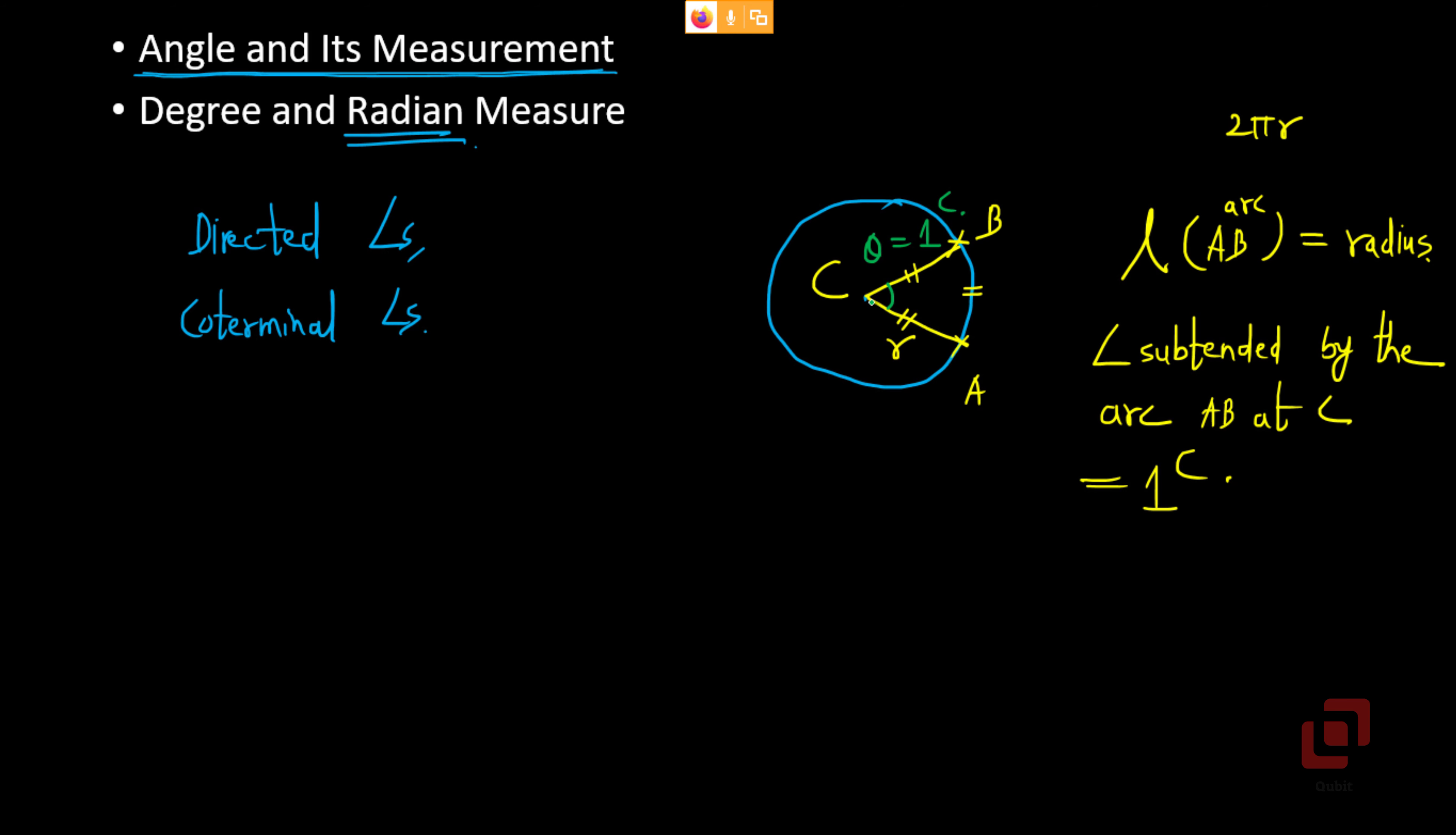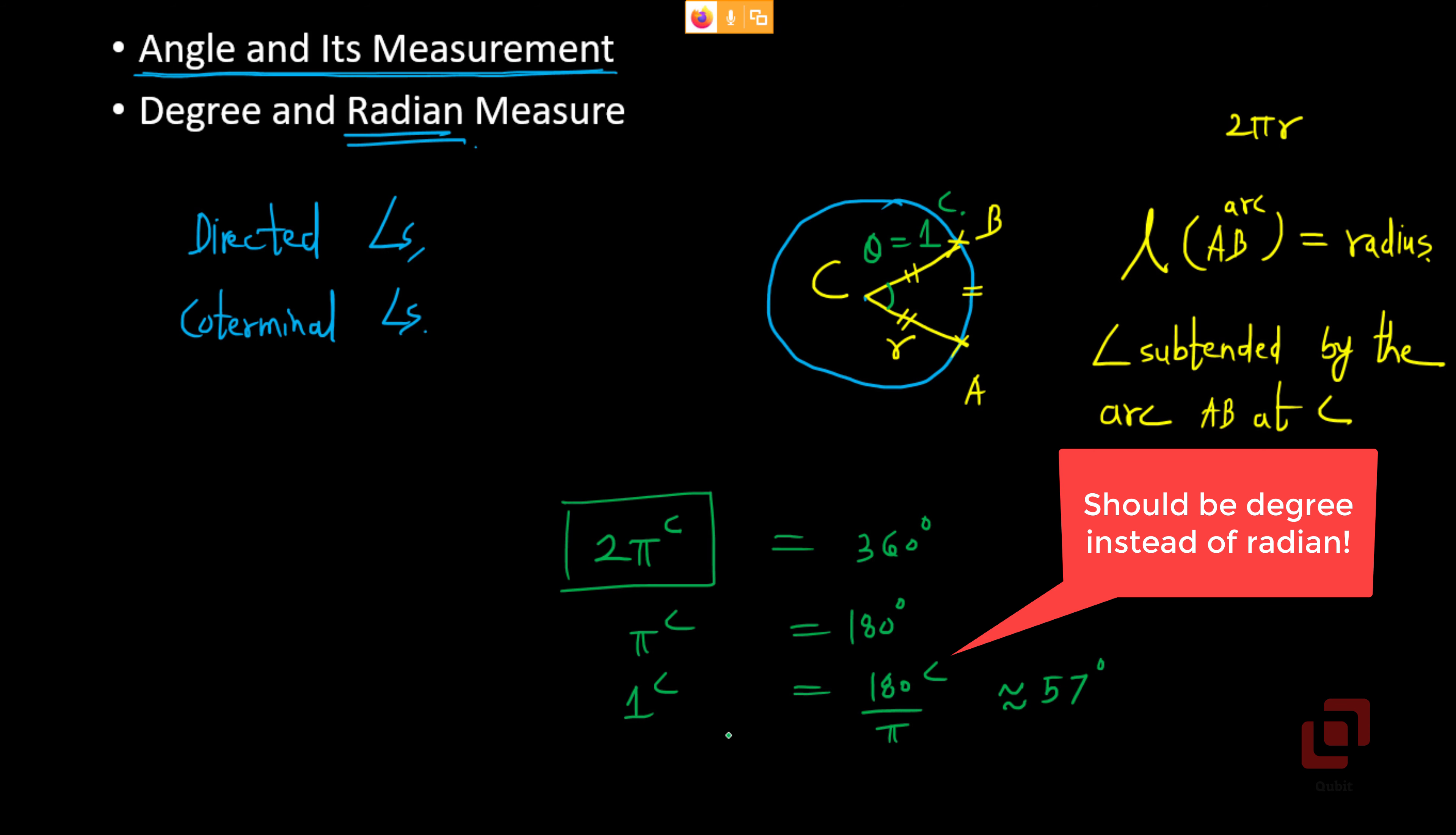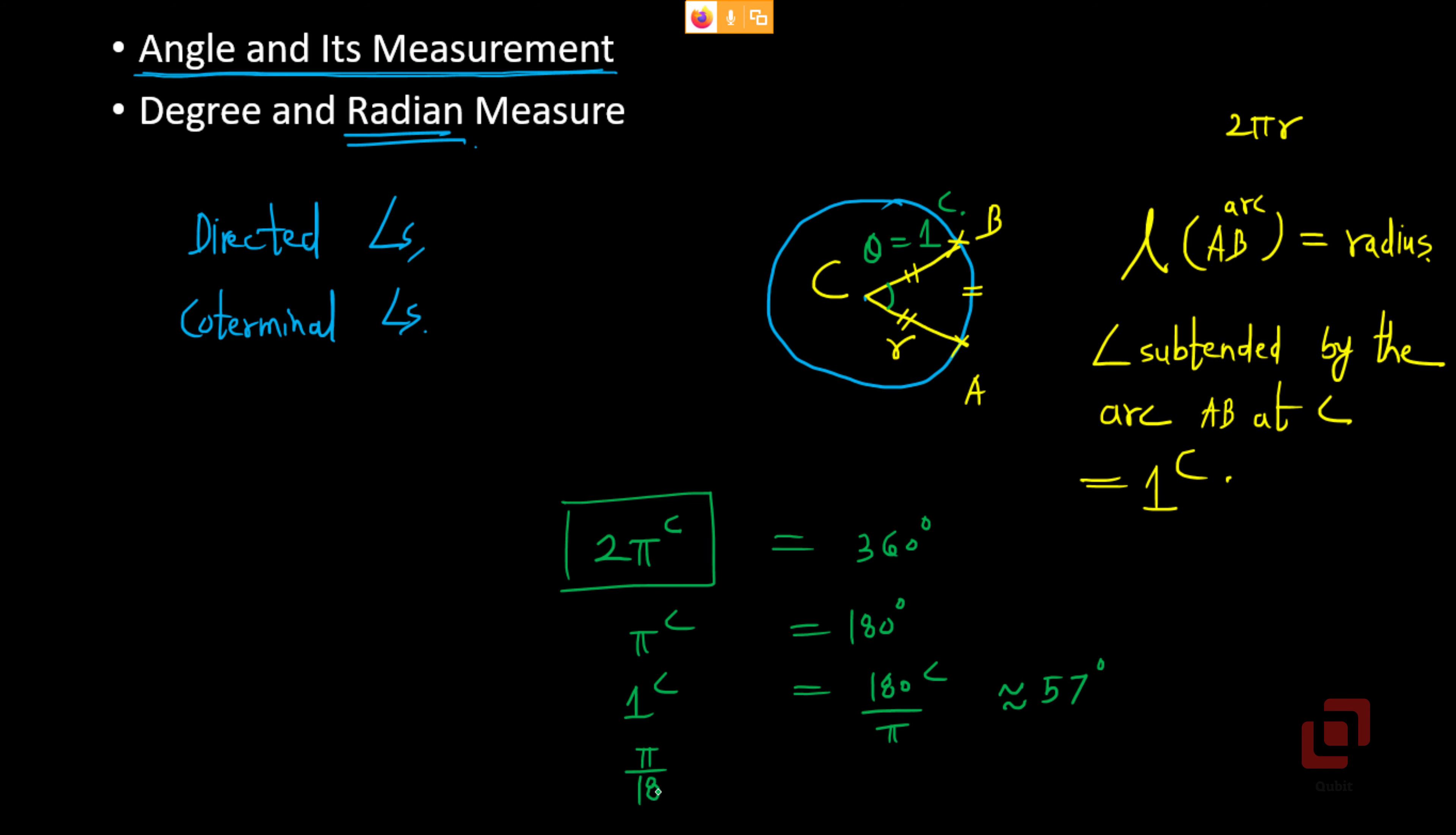The full circle subtends an angle of 2π radians. And 2π radians is 360 degrees. From this relation π radians is 180 degrees. 1 radian equals 180 divided by π degrees, which is approximately 57 degrees. And π by 180 radians is 1 degree, and all other relations for 30 degrees, 45 degrees, 60 degrees, 90 degrees, 180 degrees and 270 degrees.